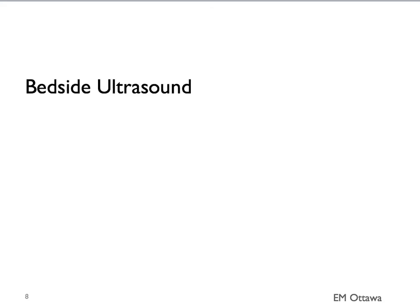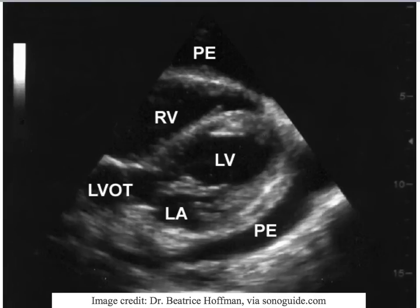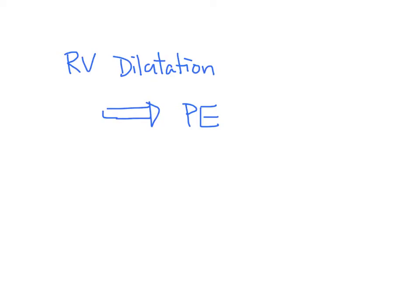Next, we'll talk about bedside ultrasound. What other causes can be excluded by bedside ultrasound? Let's take a look at this still image. The chambers of the heart are labeled. The black space in the pericardium represents pericardial effusion. On bedside ultrasound, you might also be able to see right ventricle dilatation in the case of a PE.